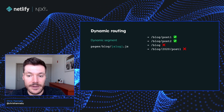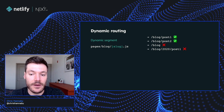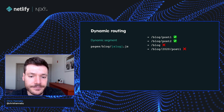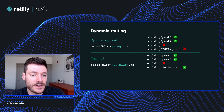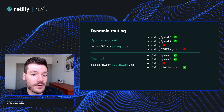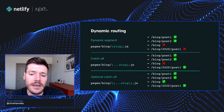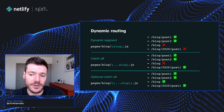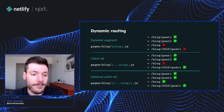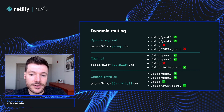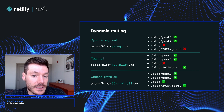First, we can have a dynamic segment, which will only match the explicit segment of the path that we've declared. We can also have a catch-all, and that's going to match the segment but also paths deeper. And then finally, we can have an optional catch-all, which does exactly the same as the options above, but it will also match the route of the directory that it was declared in.